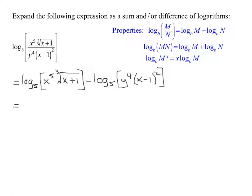So I'm going to have log to the base 5 of x to the 5th, because this is a sum, plus log to the base 5. And now I don't want to write this as a cube root, but remember a cube root written in exponential form is x plus 1 to the 1/3rd minus.